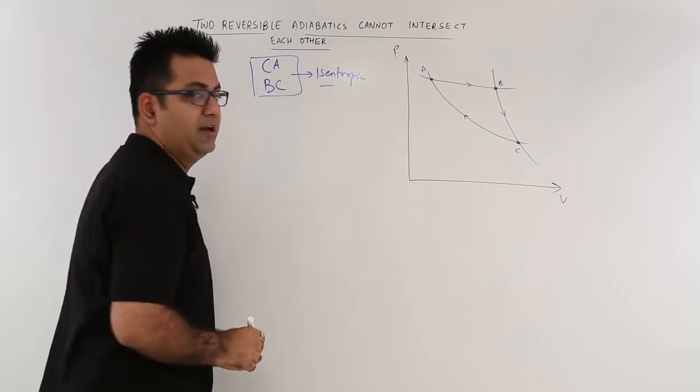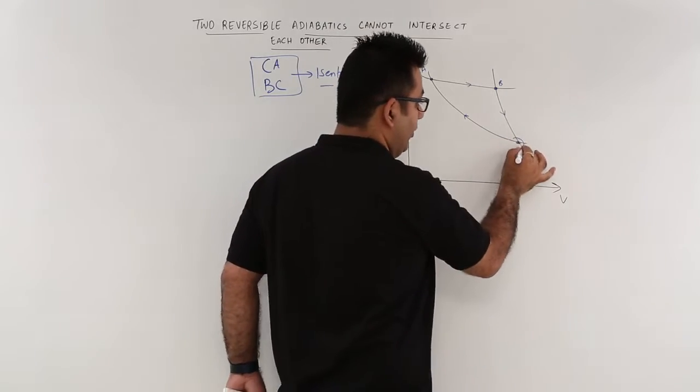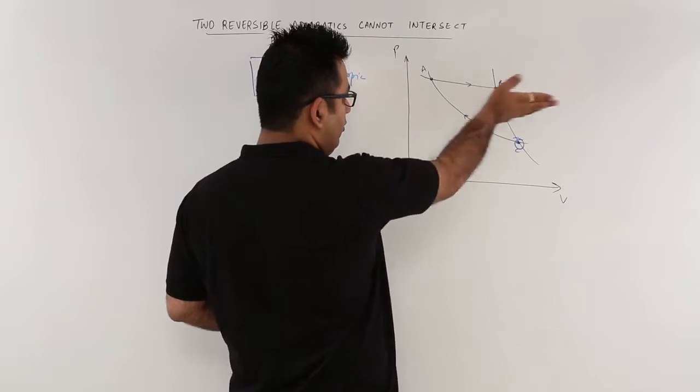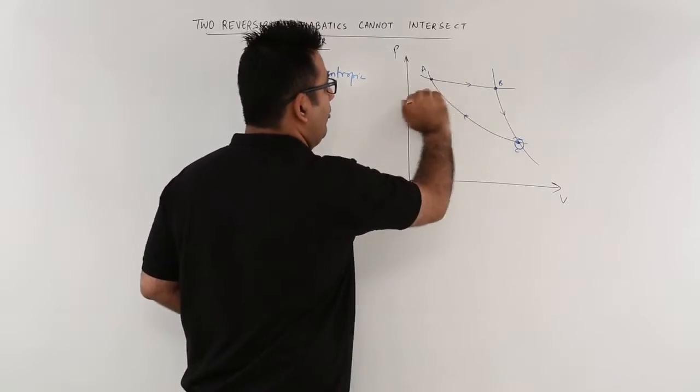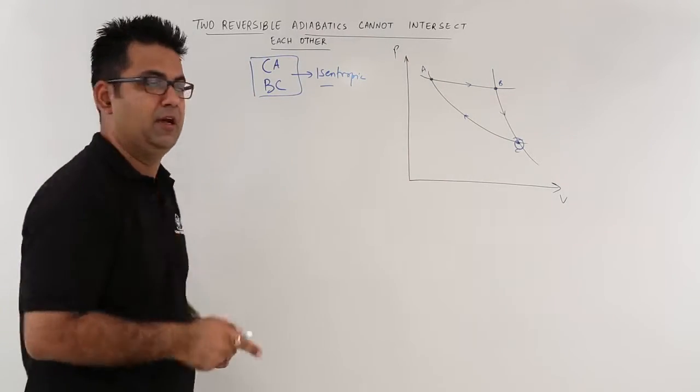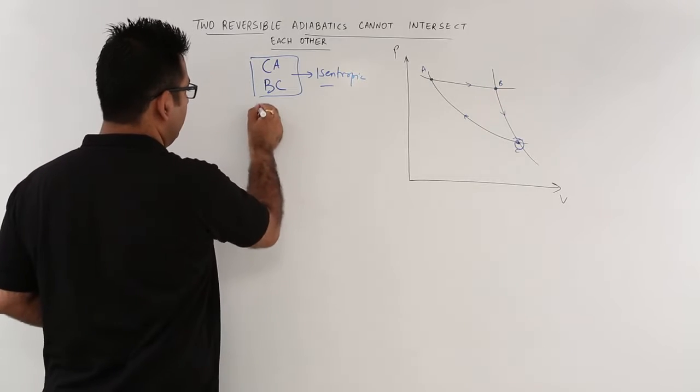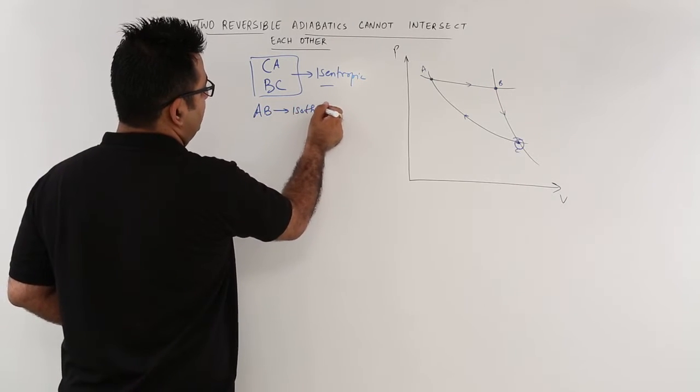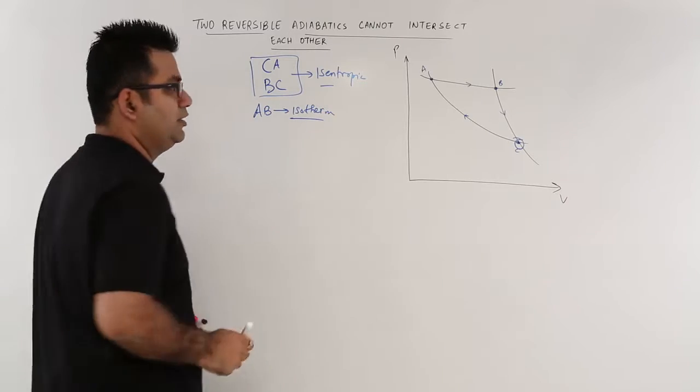They are intersecting at the point C. And we have cut across these two isentropics with a constant temperature line. So AB is an isotherm, which is a constant temperature line.